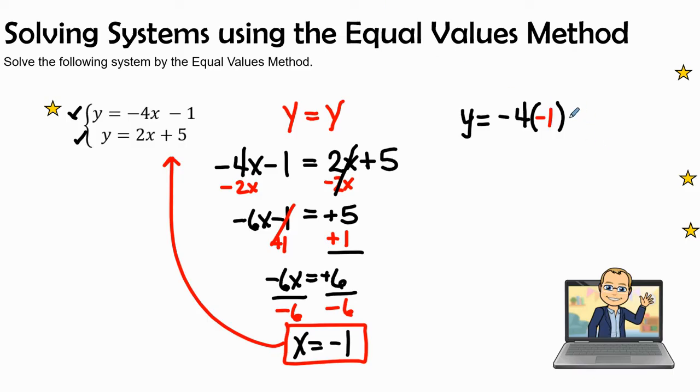And then negative 4x, then minus 1, because this is the first equation. So here we go to solve. Negative 4 times negative 1 is positive 4, and I bring down the negative 1. So y is equal to positive 3.